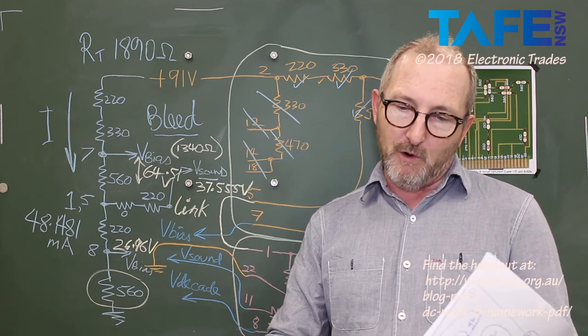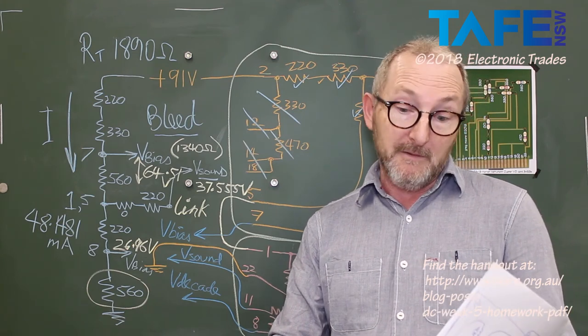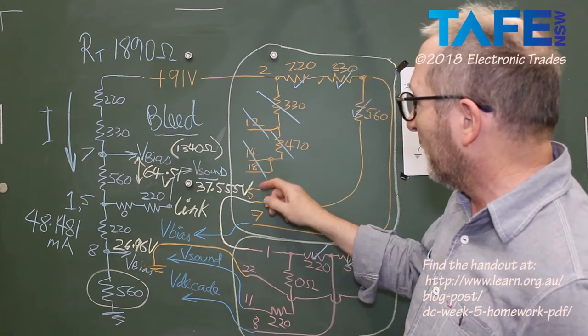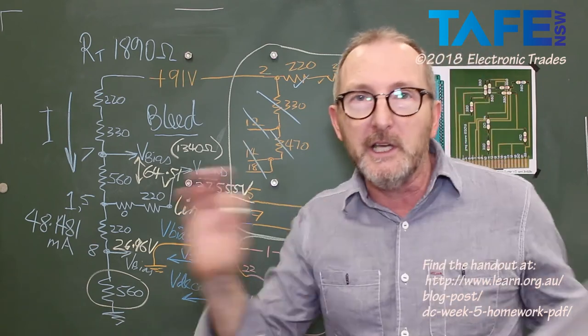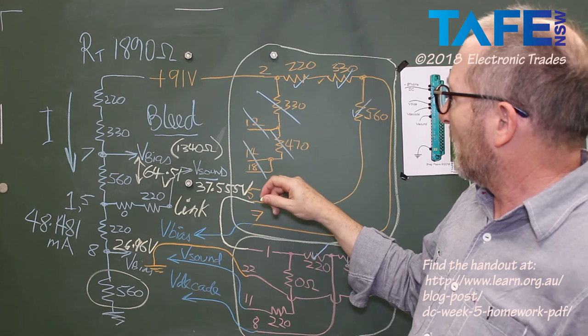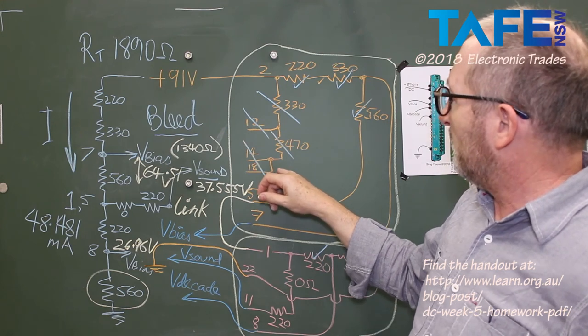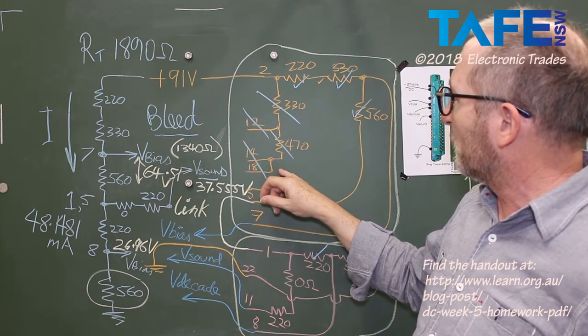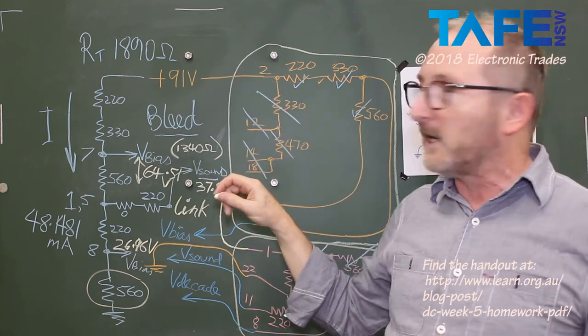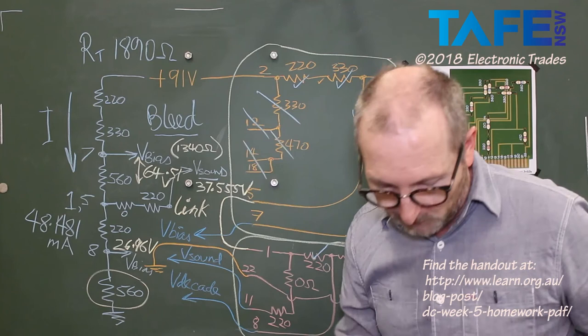When we look at the table, it actually asks me for unloaded voltage at pin 5, pin 1, and pin 18. So originally I put a stroke through that and I said I don't need it. But now I take a closer look at it and I say ooh, maybe I do need it. So the voltage at pin 18, if I've drawn that correctly, should just be 91 volts unloaded.